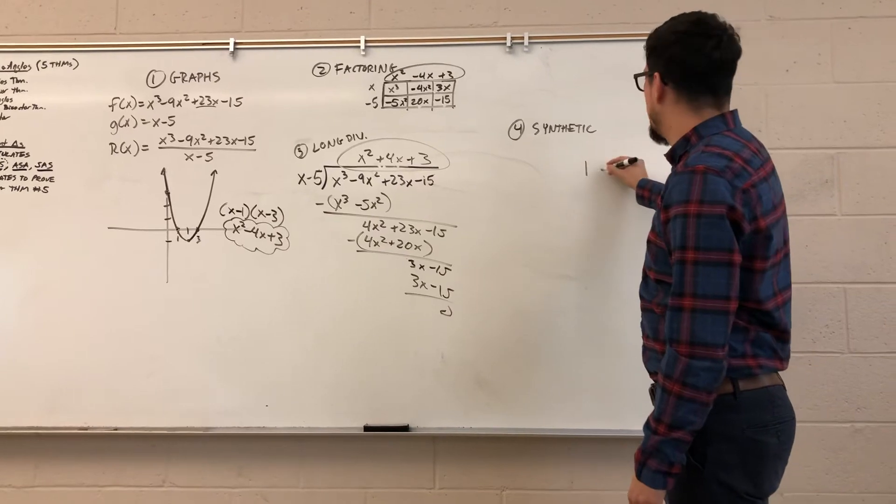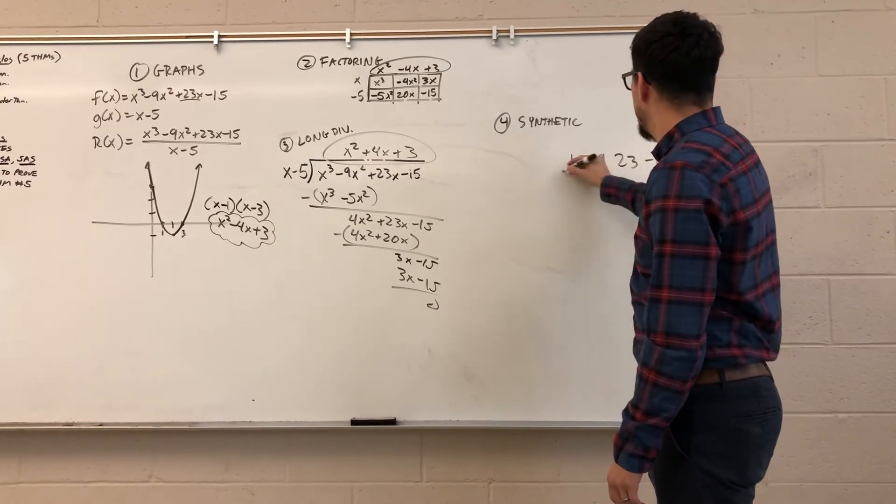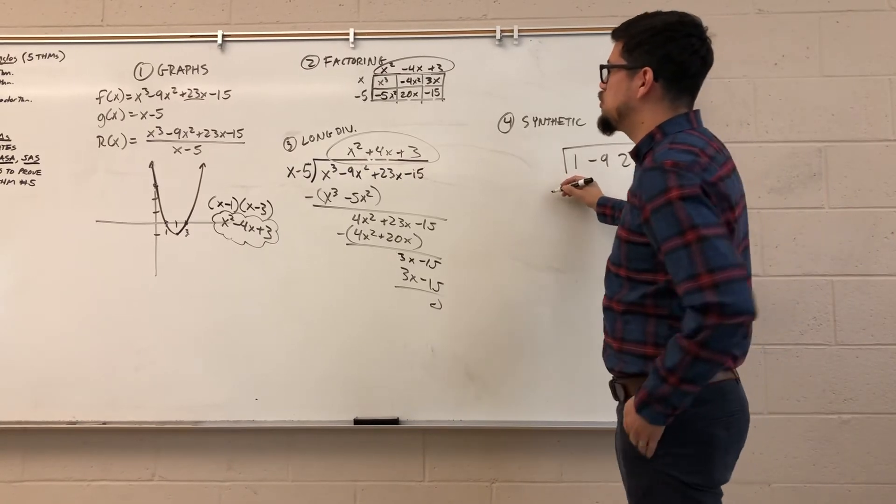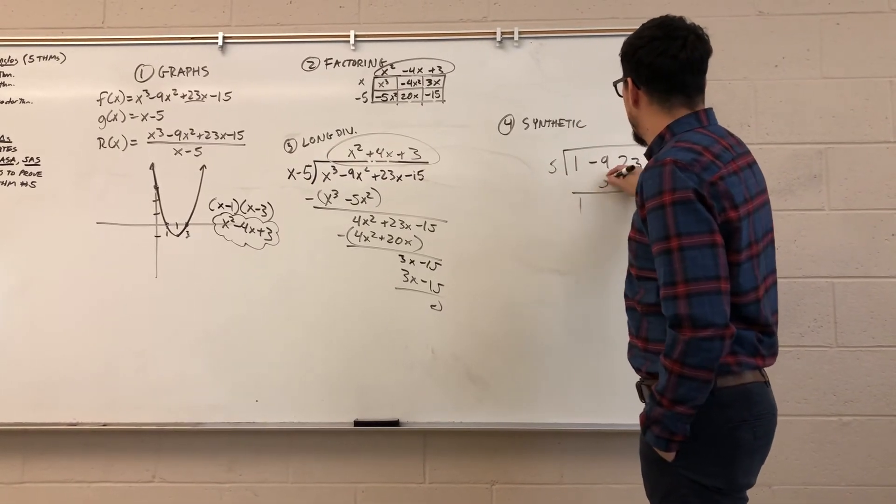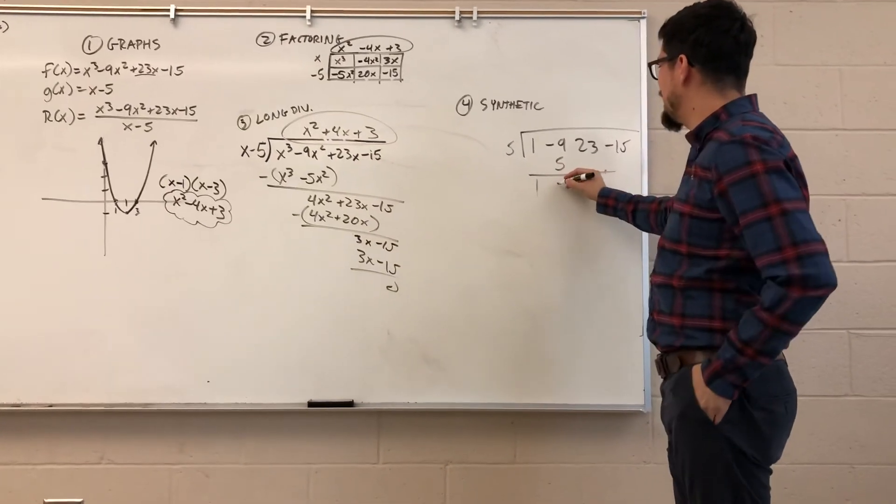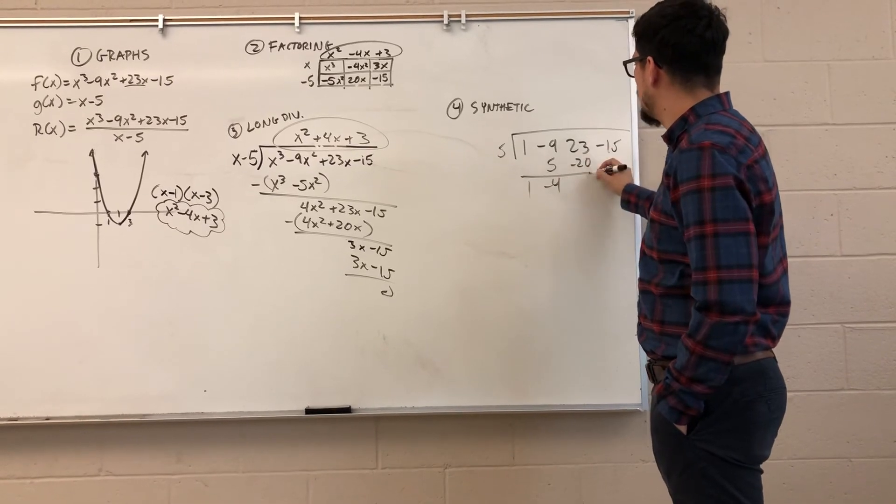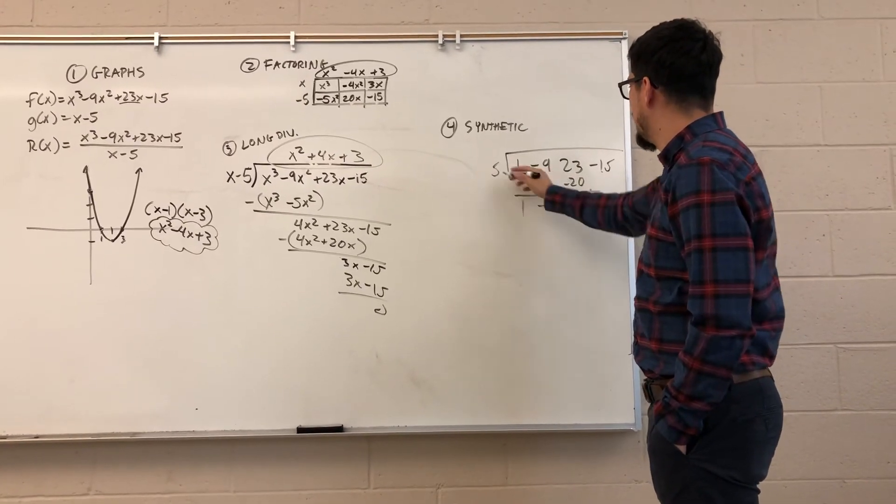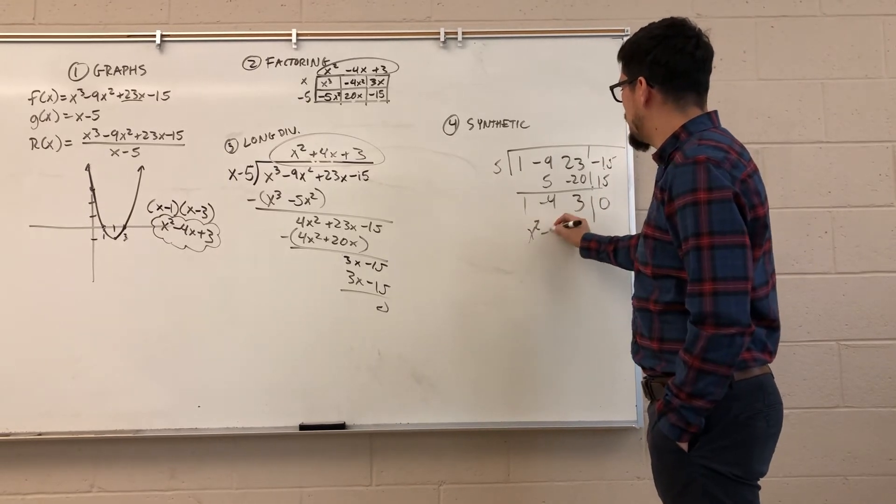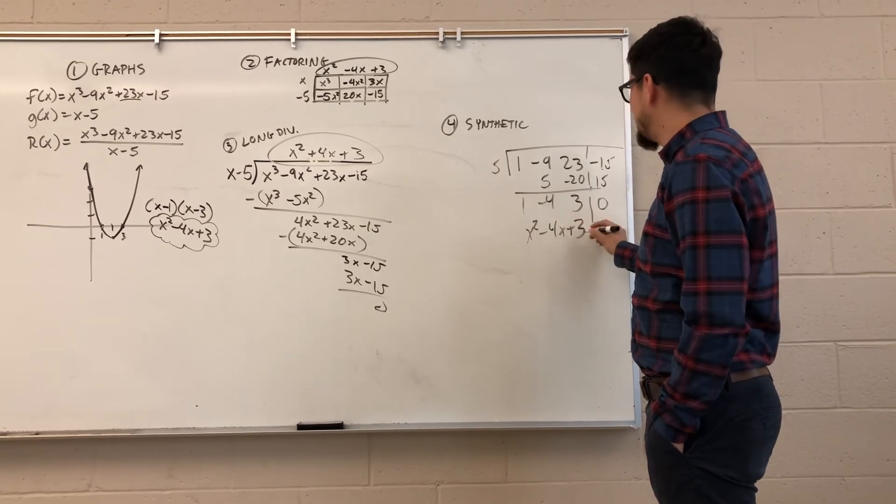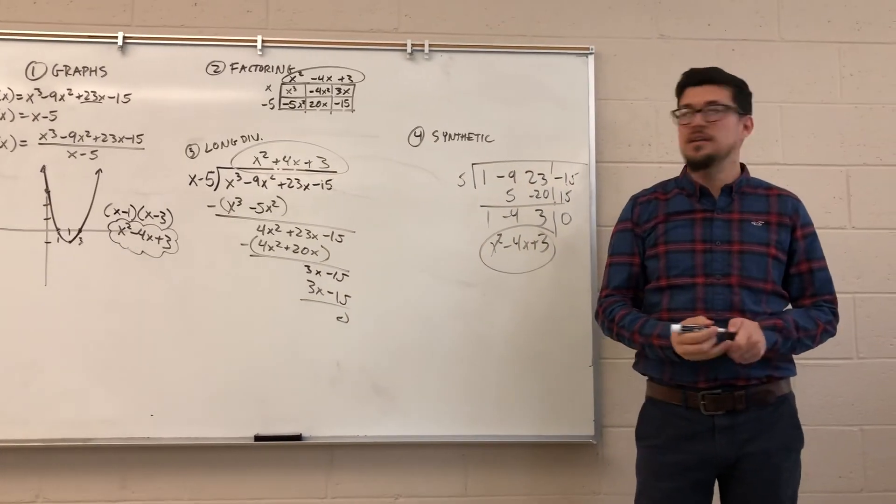Here you go. We go 1, negative 9, 23, minus 15. Synthetic division into 5. Carry down my 1. 1 times 5. Negative 5 and 9 give me negative 4. 5 and negative 4, negative 20. 23 minus 20 is 3. 5 times 3 is 15. Remainder column gives me zero. This is x squared minus 4x plus 3. Four different times, and that's how you do it.